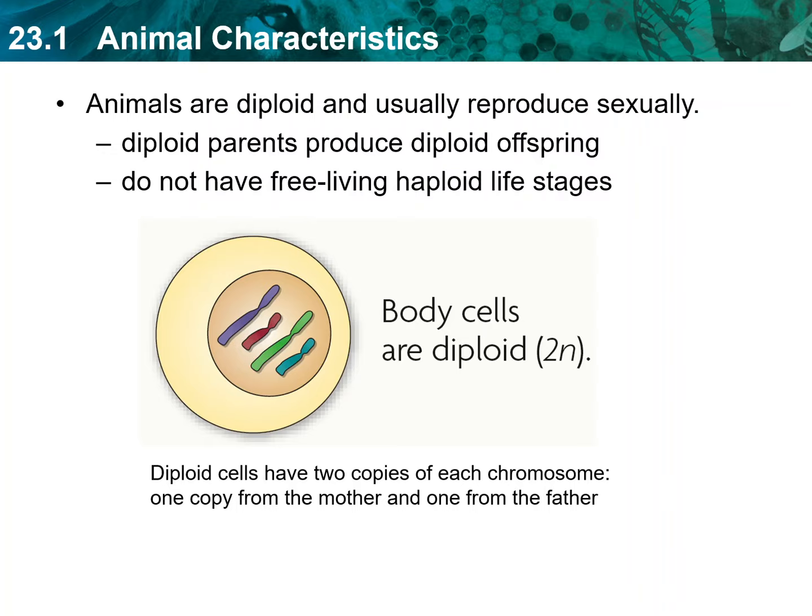Animals are the only multicellular organisms that do not alternate between free-living diploid and haploid stages. In all animal species, the individuals that reproduce are diploid, and they produce offspring that are also diploid. Some kinds of animals can reproduce both asexually and sexually. For example, a hydra can clone itself by budding, but these species also have male and female sex organs and reproduce sexually. A few animals have become completely asexual — all whiptail lizards, for example, are females, and offspring are clones of the mother. But these animals evolved from sexual species, and their asexual habits are derived characters.